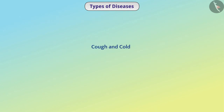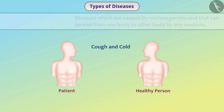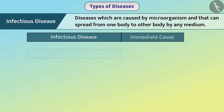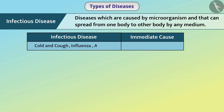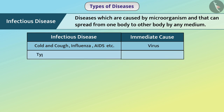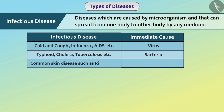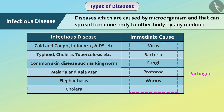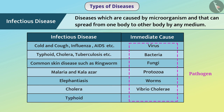Some diseases like cough and cold can spread in a community because their cause is microorganisms that can spread from one body to another by any medium. Such a disease is called an infectious disease. For example, cold and cough, influenza, and AIDS are caused by viruses. Typhoid, cholera, and tuberculosis are caused by bacteria. Ringworm is caused by fungi. Malaria and kala-azar are caused by protozoa, and elephantiasis is caused by worms. The microorganism that causes a disease is called a pathogen. For example, cholera is caused by Vibrio cholerae and typhoid by Salmonella typhi.